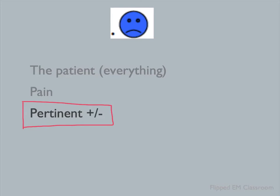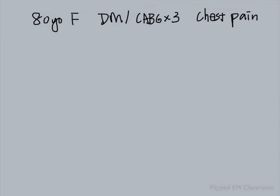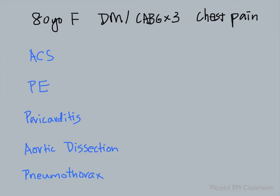Remember the deadly diagnosis box that we talked about? This is the place to put them. Let's use the same example — our diabetic 80-year-old patient with chest pain. After you find out everything about the chest pain, we'll go into pertinent positive and negative questions. So what are the deadly diagnoses that we want to rule out in this patient? This is a list that includes acute coronary syndrome, pulmonary embolism, pericarditis, aortic dissection, and pneumothorax. During your presentation, you want to comment on pertinent positives and negatives pertaining to each of these diagnoses.